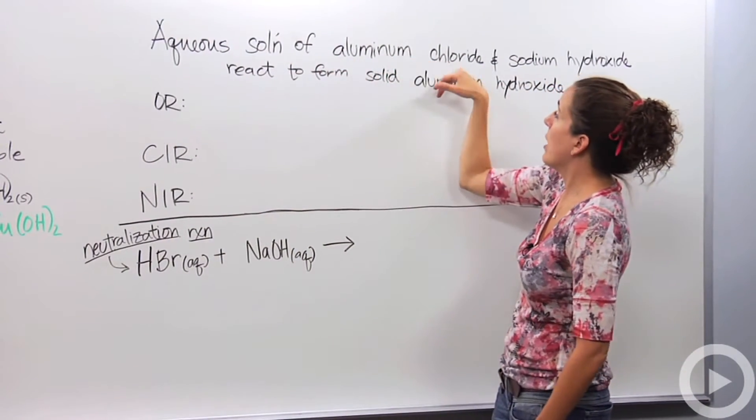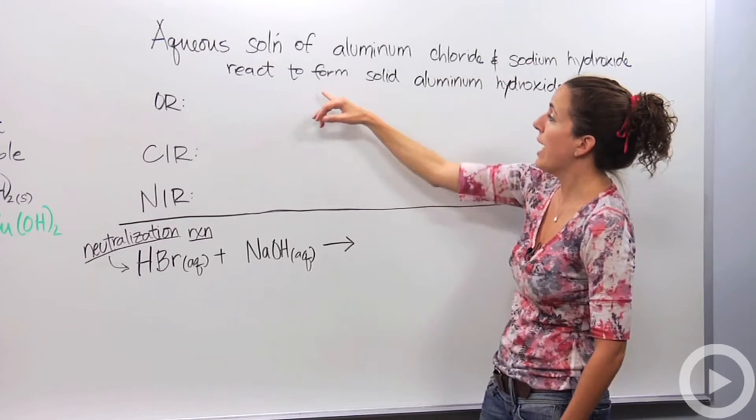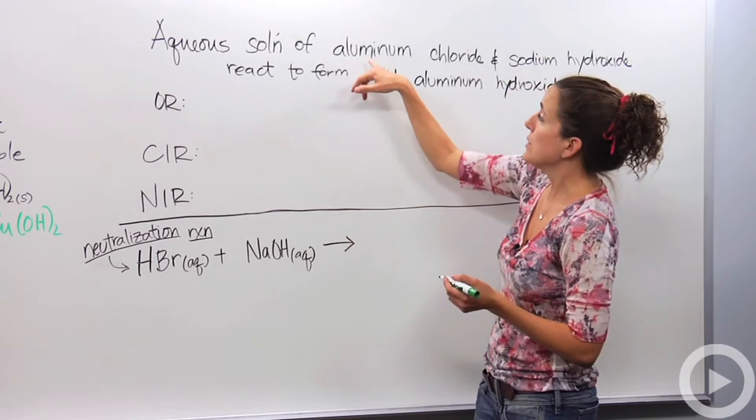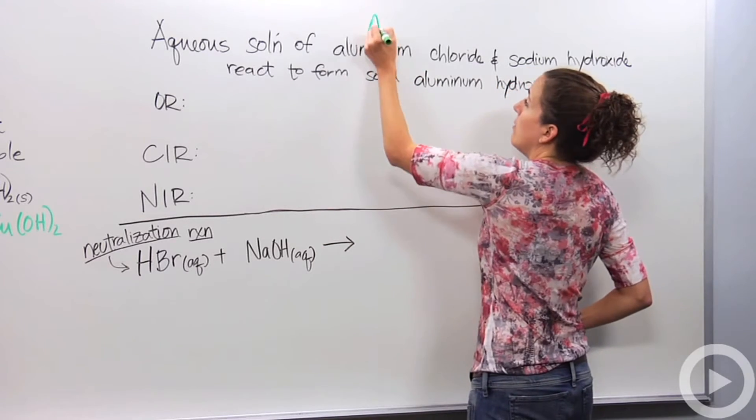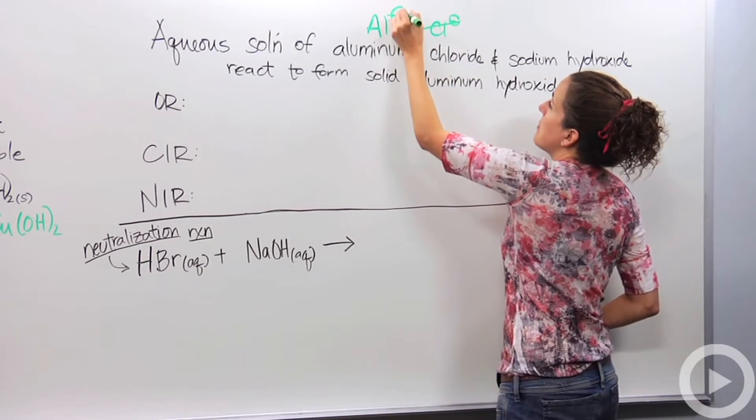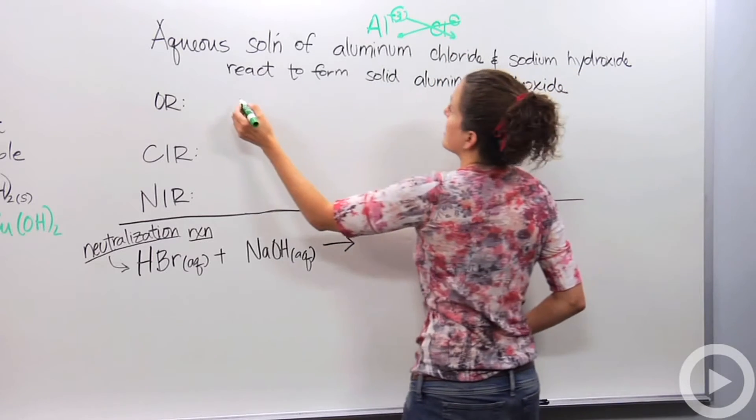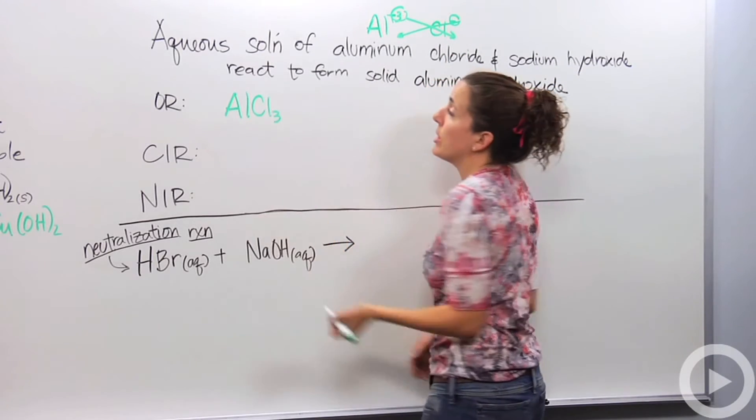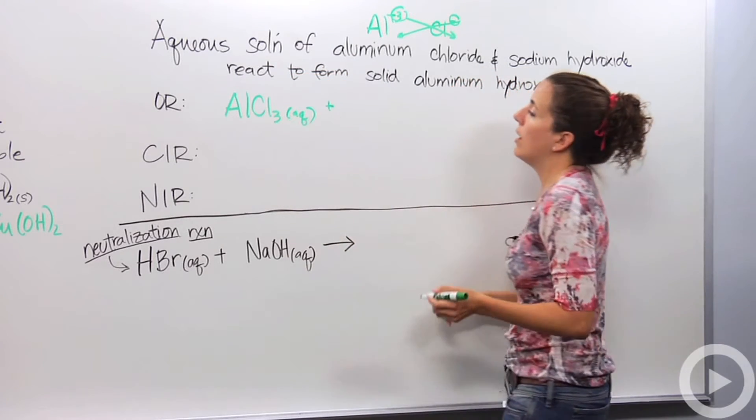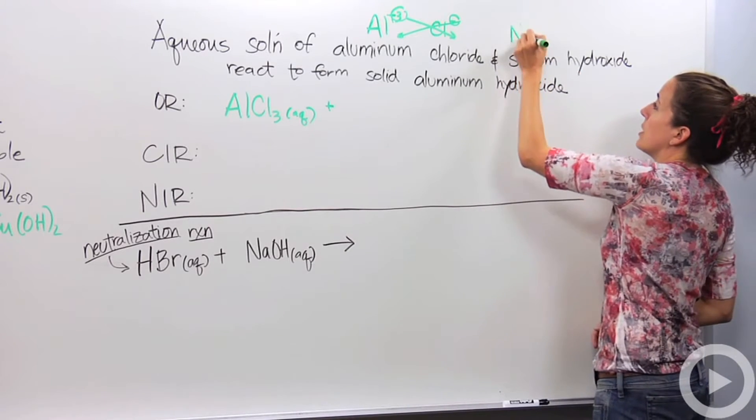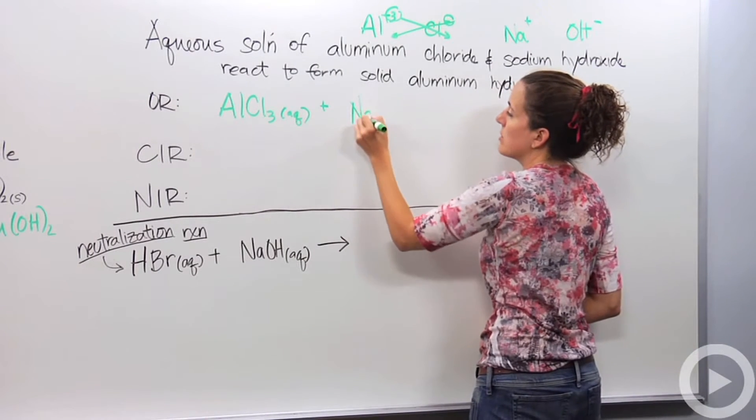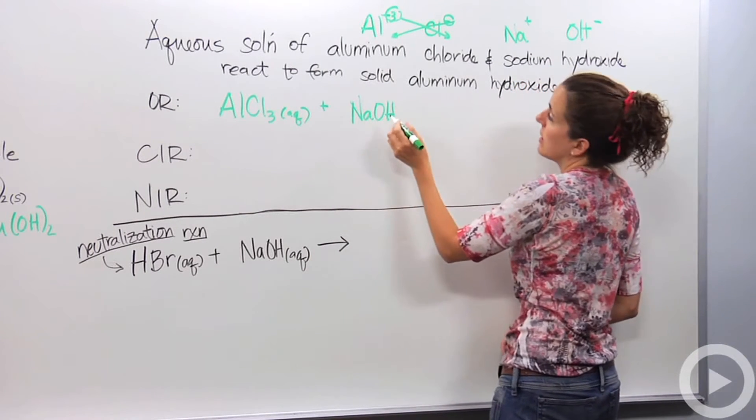An aqueous solution of aluminum chloride and sodium hydroxide react to form solid aluminum hydroxide. Let's break this up into its overall reaction. We have aluminum chloride: Al plus 3 and Cl minus. When they actually make their compound, it's going to be AlCl3, and we know it's an aqueous solution. Reacts with sodium hydroxide: Na plus and OH minus. So together, they're just going to be NaOH, and this is an aqueous solution also.